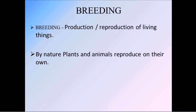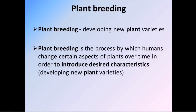By nature, plants and animals reproduce on their own. What is plant breeding? Plant breeding means developing new plant varieties. Plant breeding is the process by which humans change certain aspects of plants over time in order to introduce desired characteristics — developing a new variety of plant. Whatever characteristics we require, we will modify the plant by breeding it.